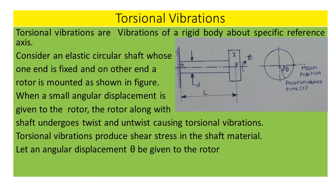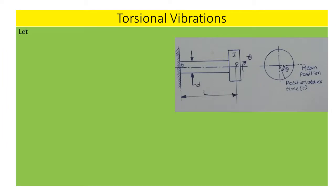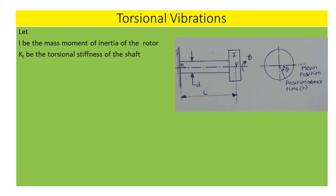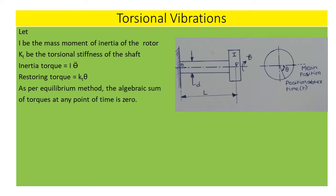Let an angular displacement theta be given to the rotor, and theta double dot be the angular acceleration of the rotor. Let I be the mass moment of inertia of the rotor, and KT be the torsional stiffness of the shaft. Inertia torque equals I·theta double dot; restoring torque equals KT·theta. As per the equilibrium method, the algebraic sum of torques at any point of time is zero.